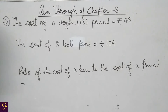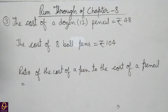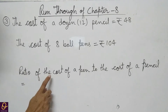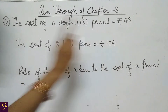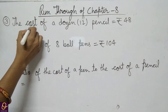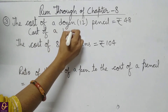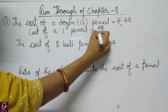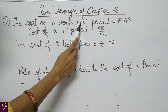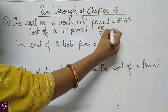Now question number 3: find the ratio of the cost of a pen to the cost of a pencil. Cost of 1 dozen pencils is Rs. 48 and cost of 8 ball pens is Rs. 104. First we find the cost of 1 pencil: 48 divided by 12 equals Rs. 4.